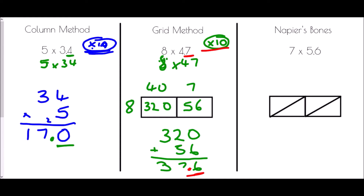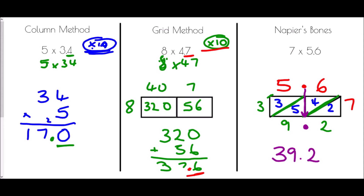Napier's bones is the only method where I won't actually be changing the value to start with, and I'll show you why. For 7 times 5.6, I write 5.6 and line the decimal point up with the line in the grid. 5 times 7 is 35, 6 times 7 is 42. Going along each diagonal: 2 in the first diagonal, 9 in the second, and 3 in the last. The cool thing about Napier's bones: I just follow the decimal point straight down, and it lands between the 9 and the 2. So 7 times 5.6 is 39.2.